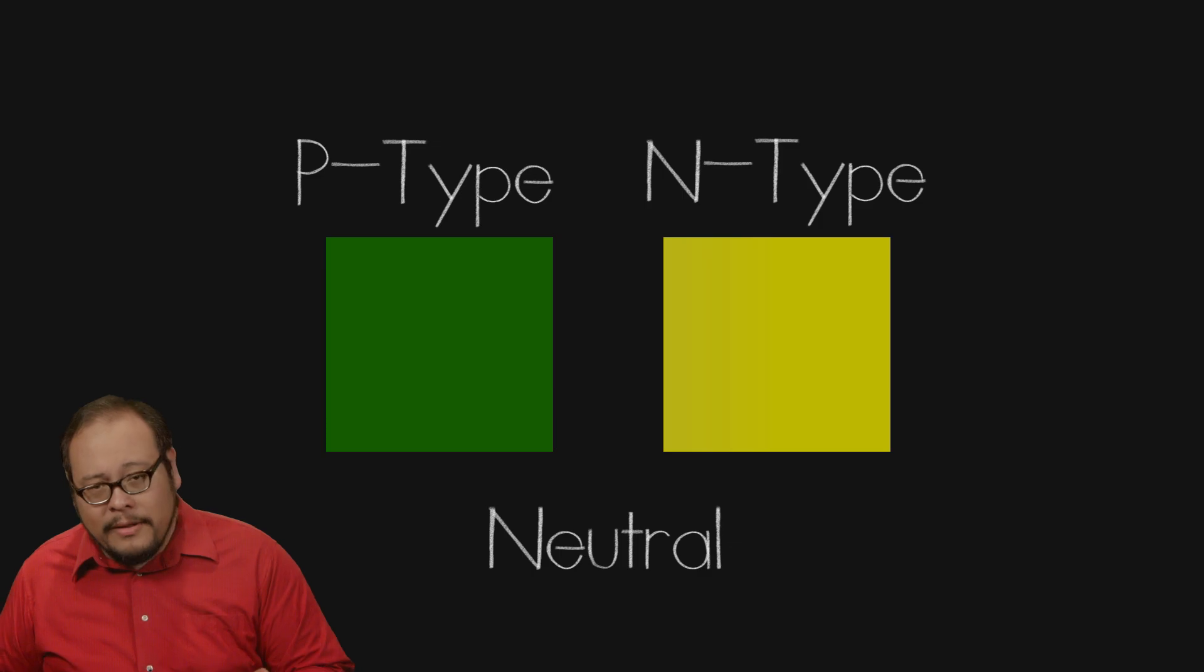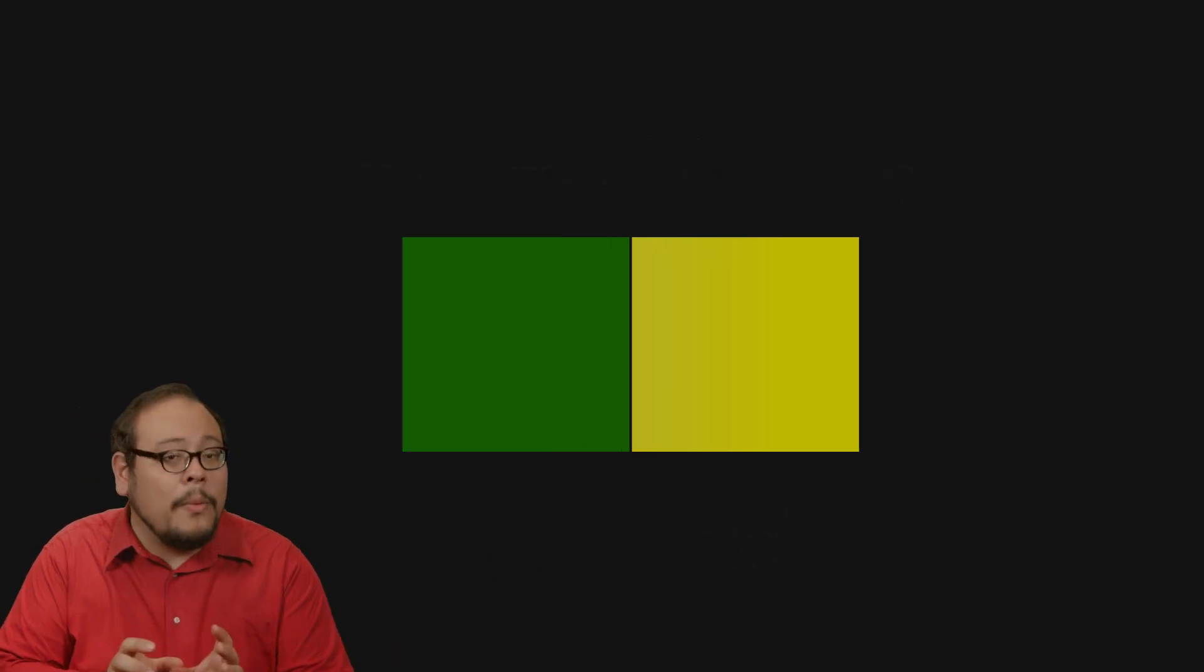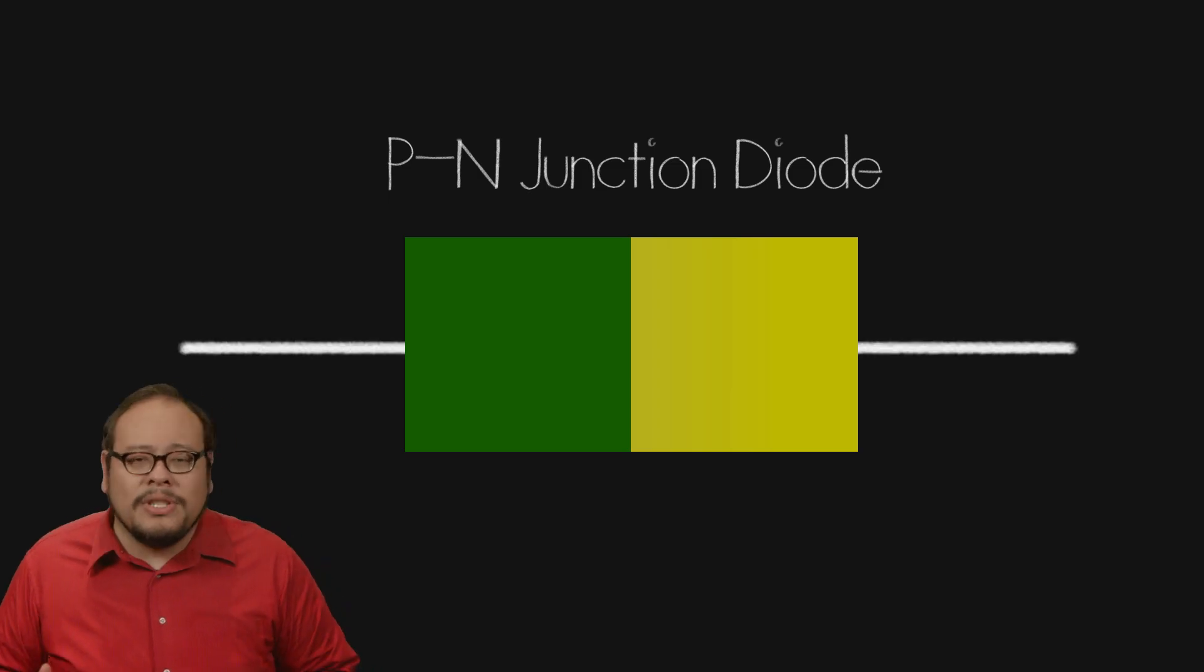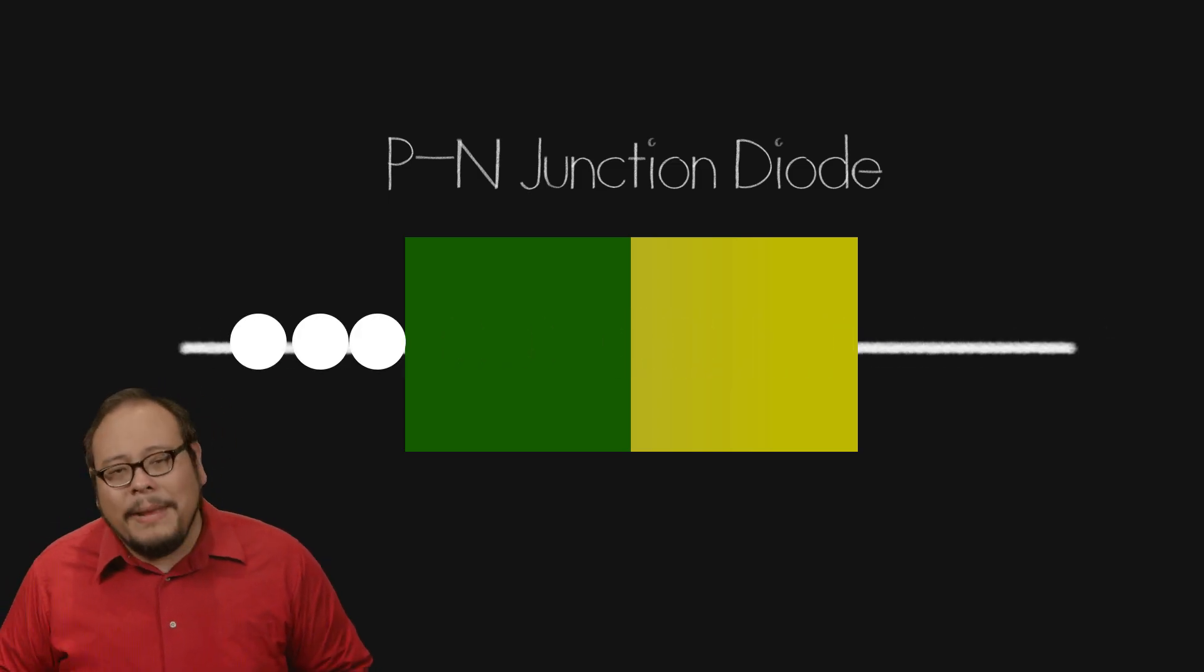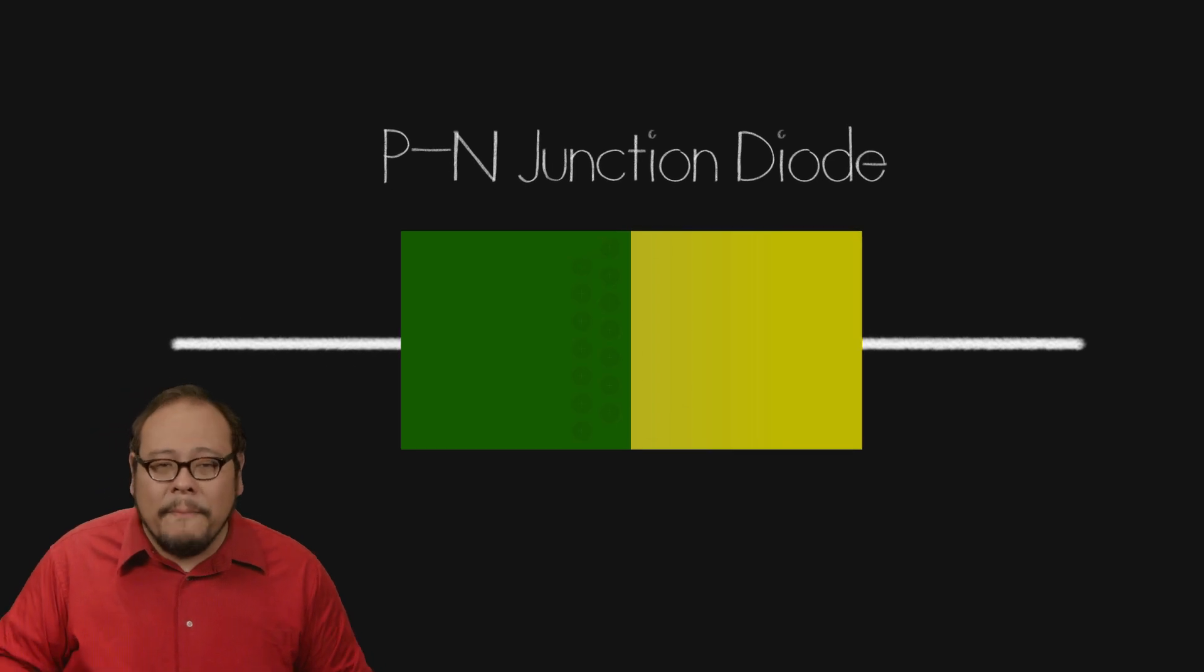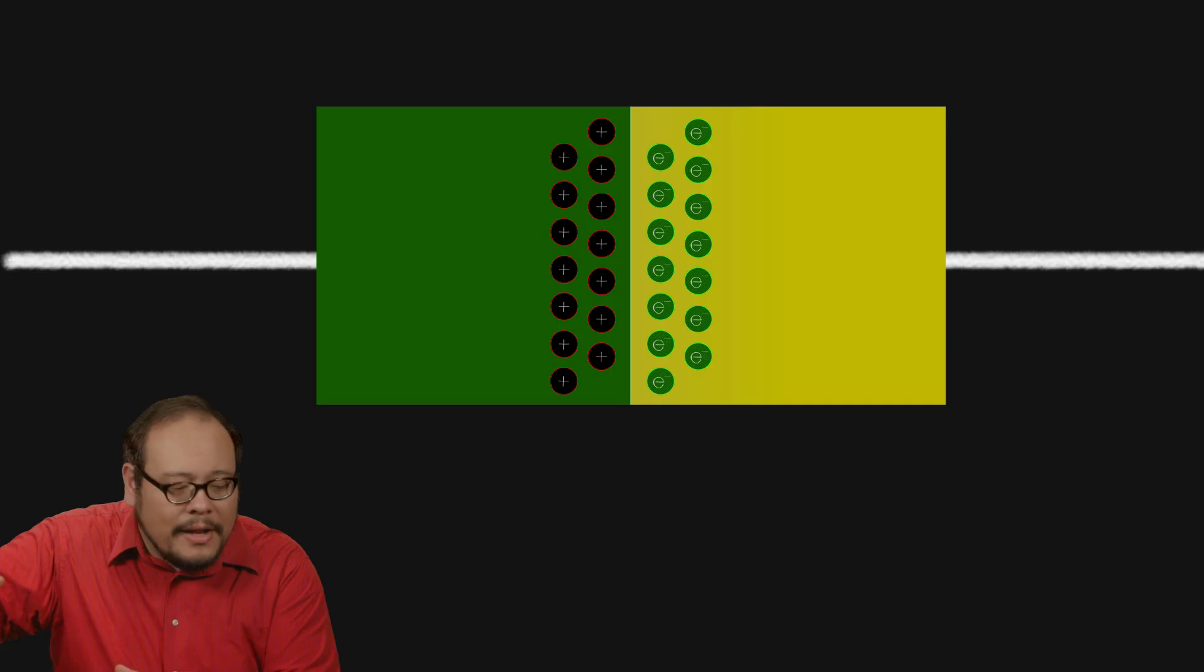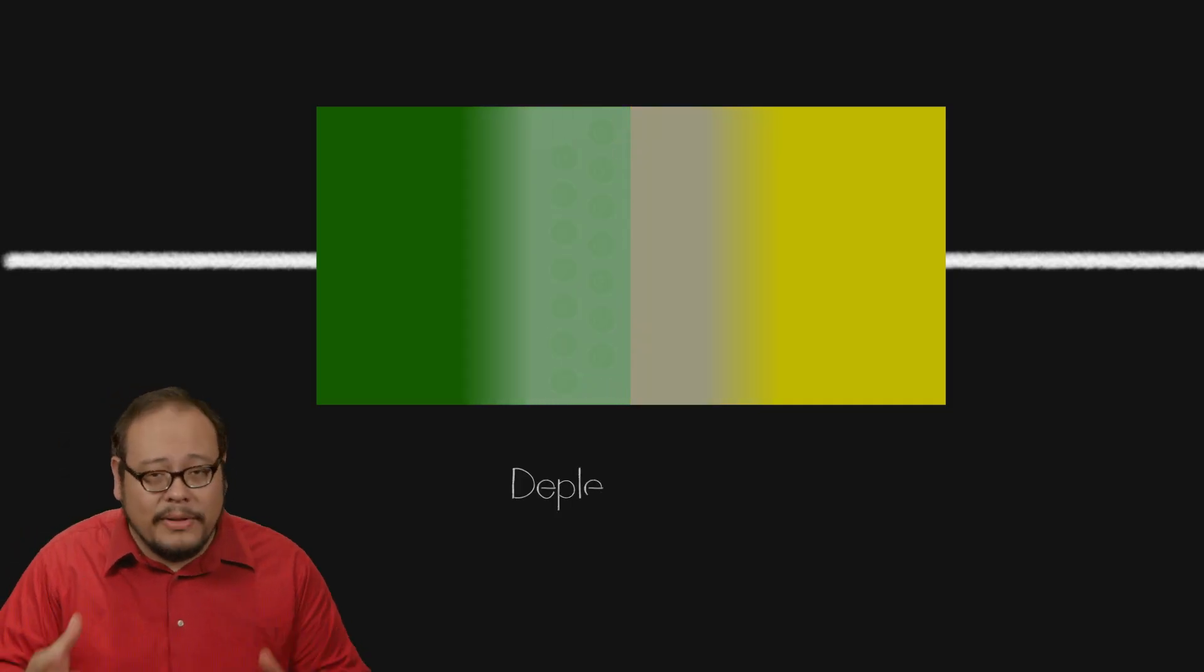Now when we put a P-type and N-type semiconductor together, we create one of the most basic but most important electronic components, a P-N junction diode. A diode is simply a device which allows current to flow in one direction but not the other. When a P-type and N-type semiconductor come together, some of the extra electrons from the N-type move in to fill the holes of the P-type, creating a depletion layer.